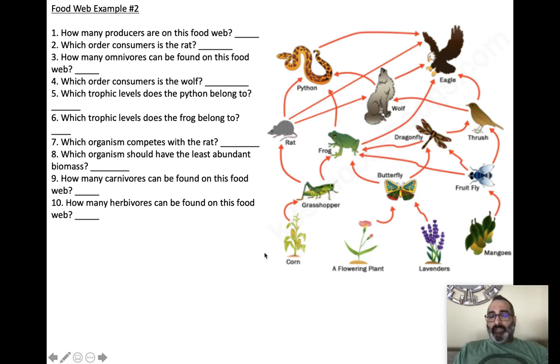How many omnivores can be found on this food web? Well, omnivores eat the producer and something else. Fruit fly only eats producers, so that's an herbivore. Butterfly eats two different producers. Well, they're still producers, so that makes it an herbivore. Grasshopper eats only corn. That makes it an herbivore. All the organisms we have that eat our producers only eat producers. So we have no omnivores. Zero omnivores are on this actual food web.